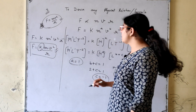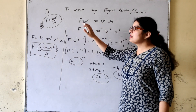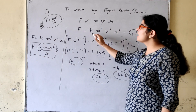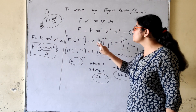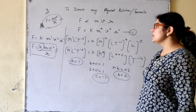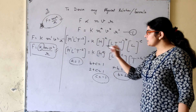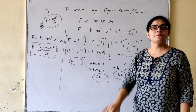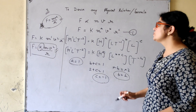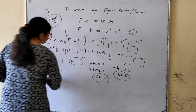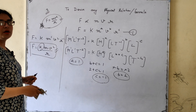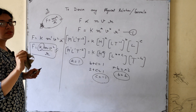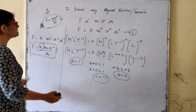Let me summarize the steps once more. First, based on the given statement, write the proportionality relation. Then assign powers a, b, c and add a constant k. Third, write dimensional formulas for all physical quantities. Then equate powers of M, L, T to find a, b, c. Finally, substitute those values back to get the formula.